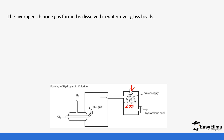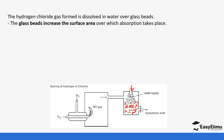In the presence of glass beads, the hydrogen chloride gas is dissolved in water. The glass beads are there to increase the surface area for absorption. Note that some assessment questions show glass beads and others don't, but remember glass beads are present where the hydrogen chloride gas is being dissolved in water.